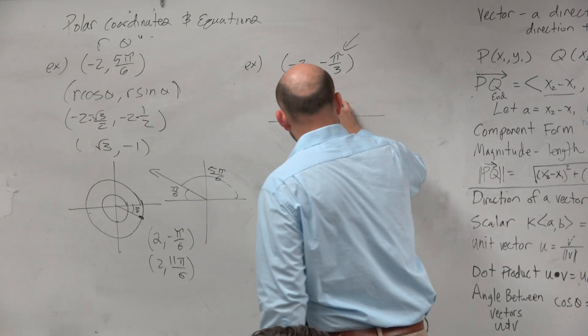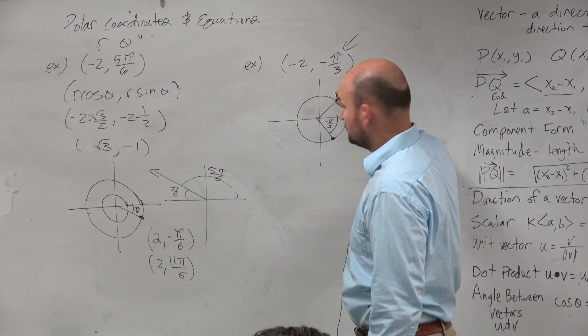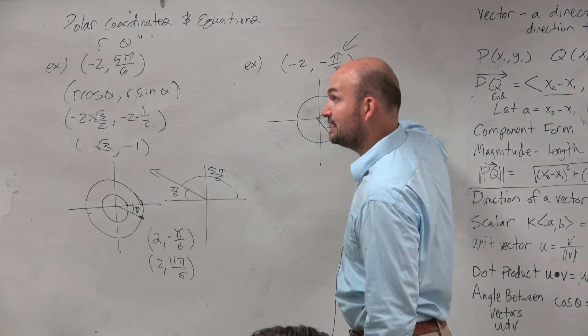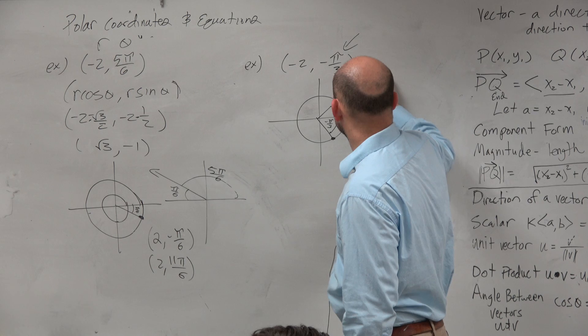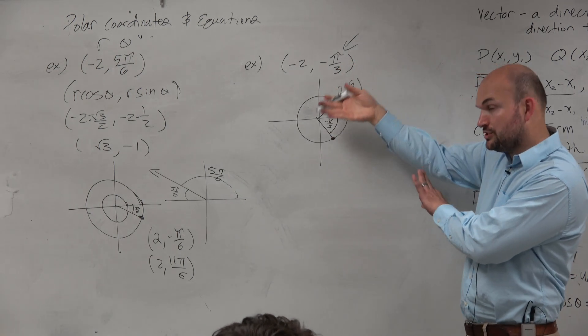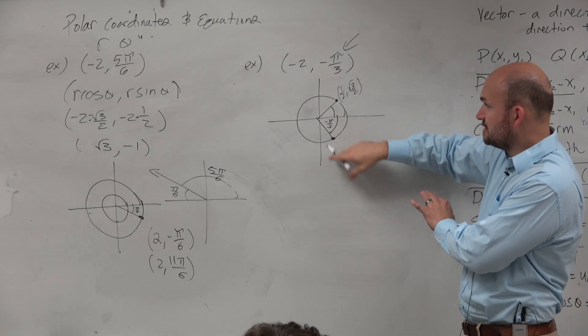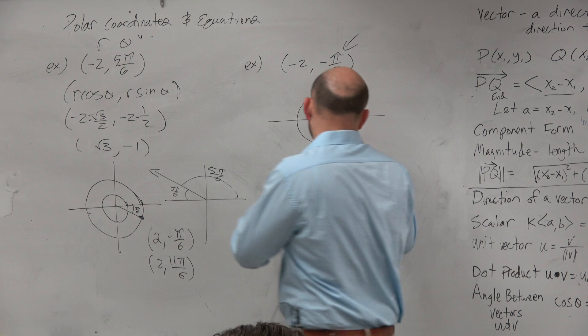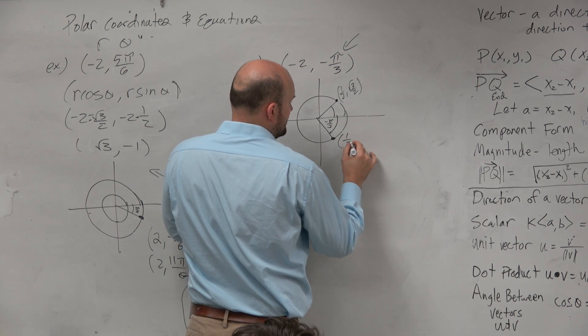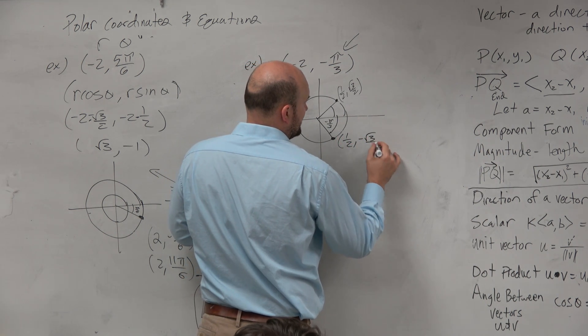If we know pi over 3, which is up here, the angle of pi over 3 is going to be 1 half comma square root of 3 over 2. So negative pi over 3 is just a reflection about the x-axis, meaning the y-coordinate is just going to be negative. So this coordinate is going to be still 1 half, but now it's going to be negative square root of 3 over 2.